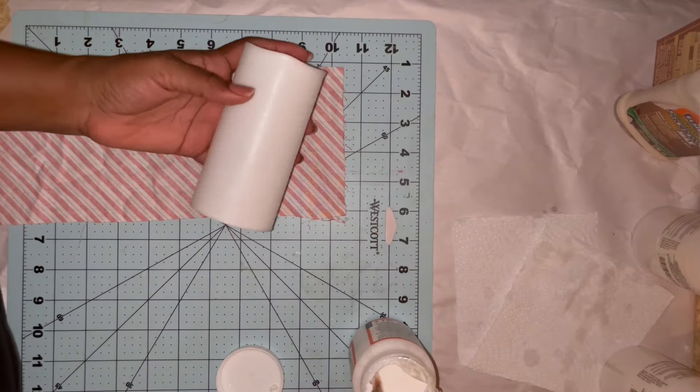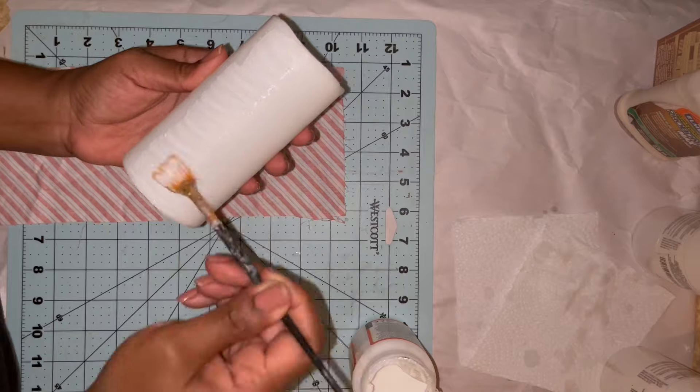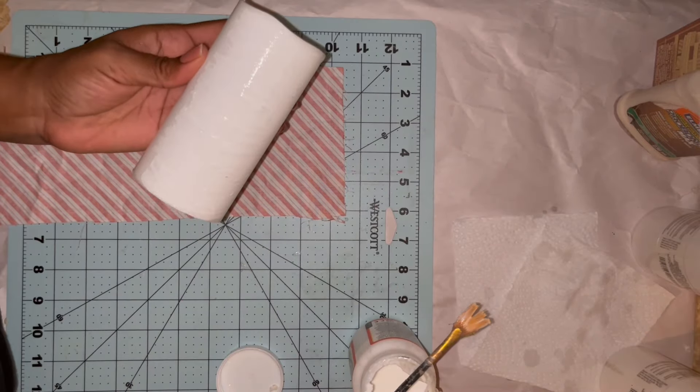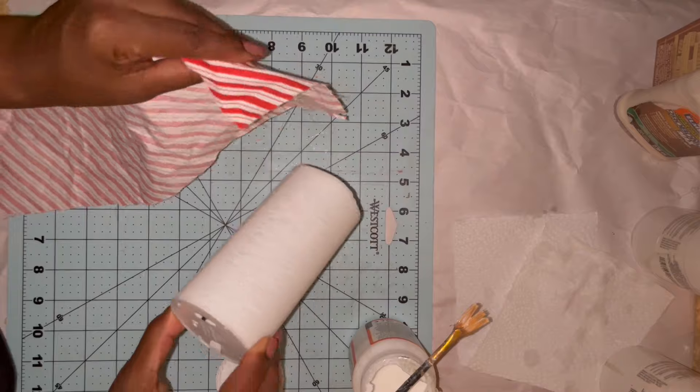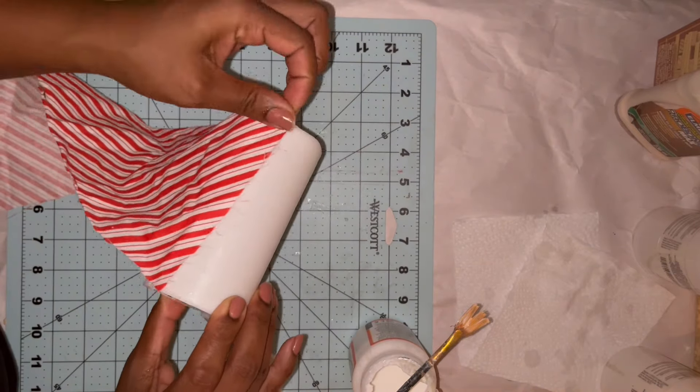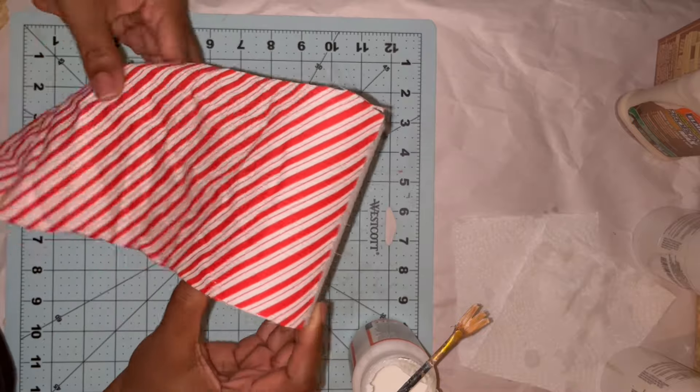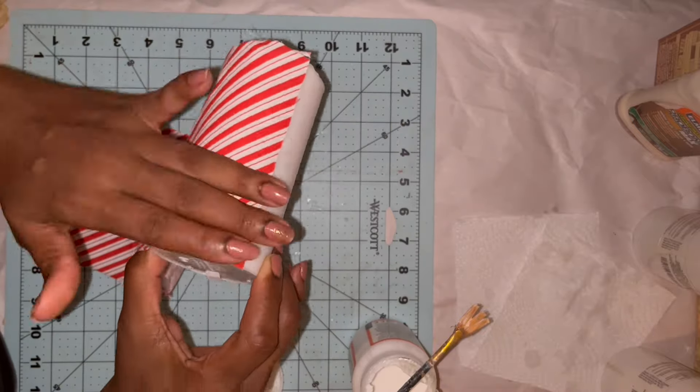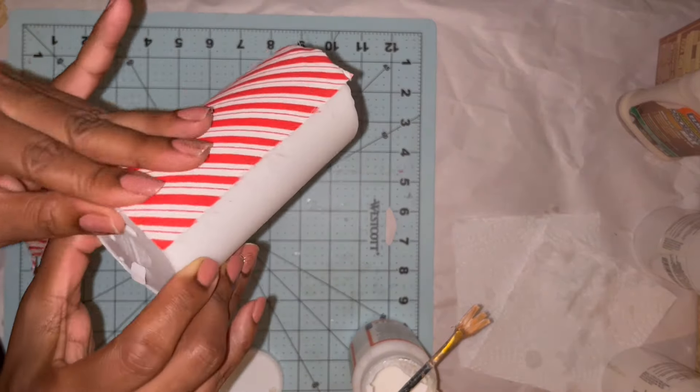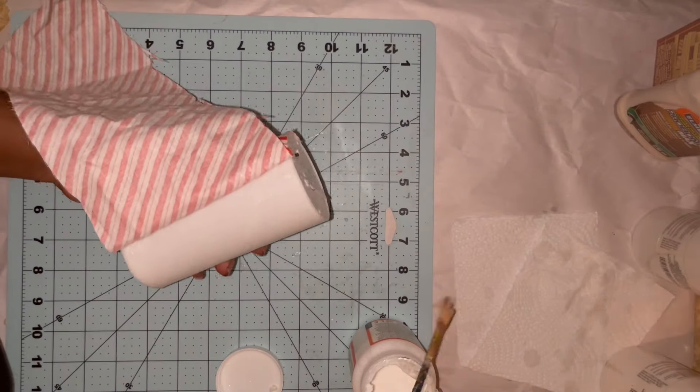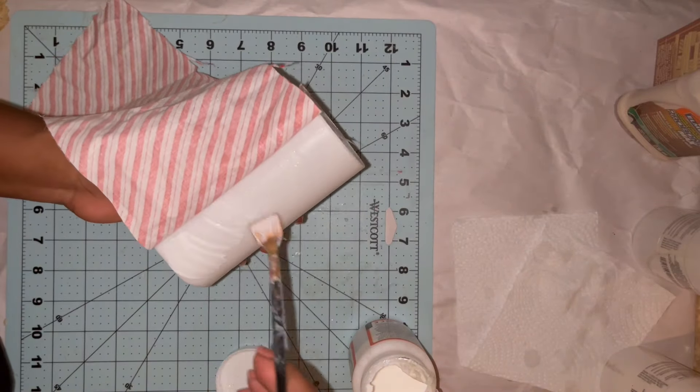So with all my strips cut out, I'm taking a fan brush and adding my gloss Mod Podge. And then I'll just work in small sections, pressing my fabric into the candle and just adjusting it as I need to, and smoothing out any wrinkles or bubbles just to get it as flat as possible, and making sure that I don't have any gaps or any parts of the actual white part of the candle showing.